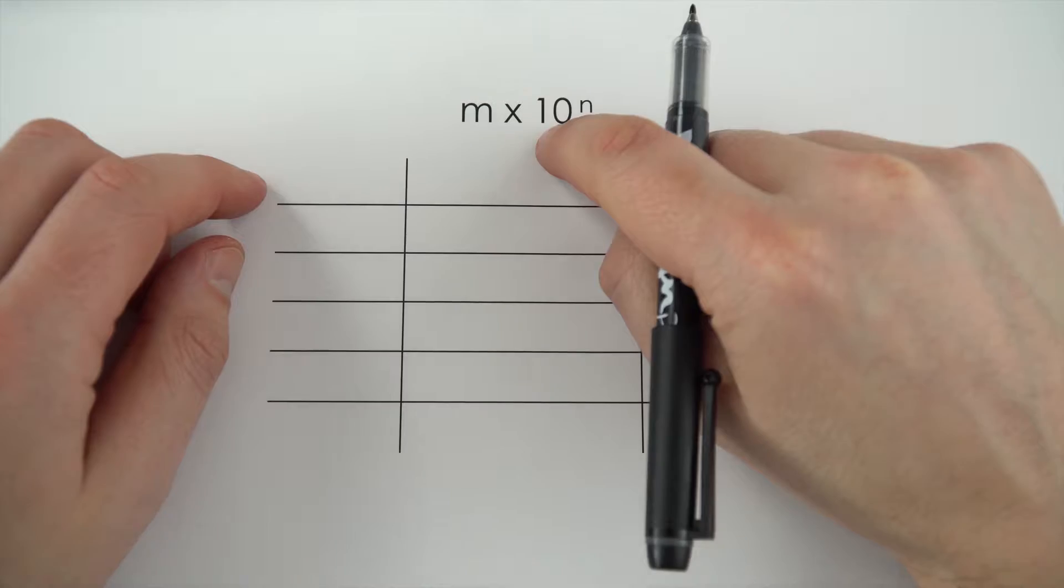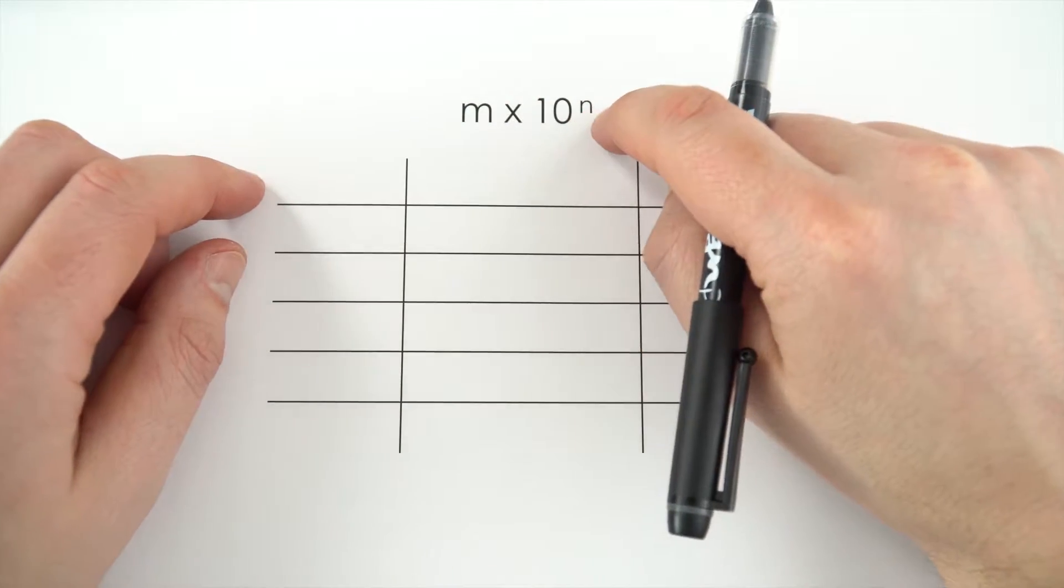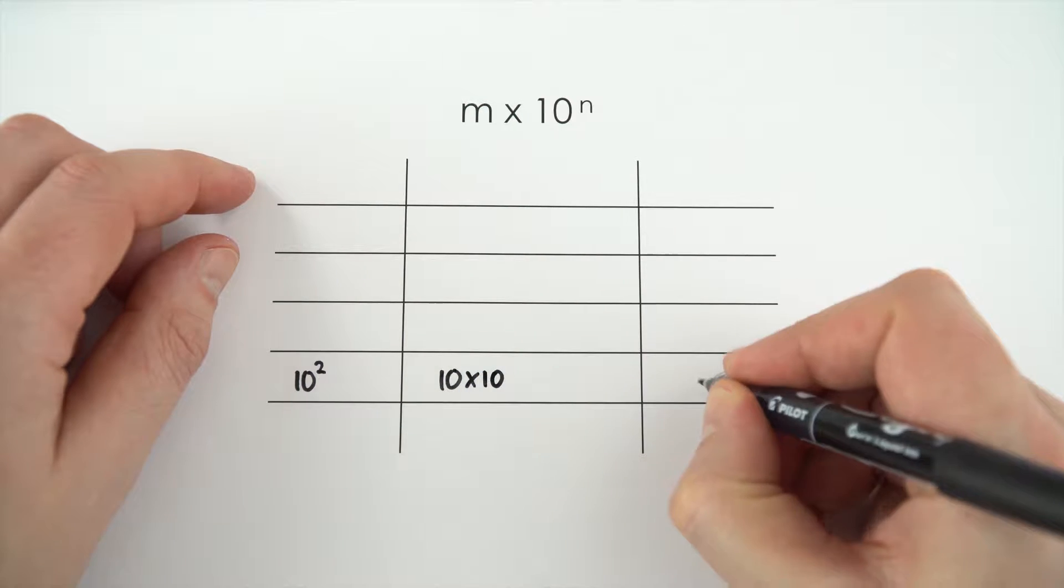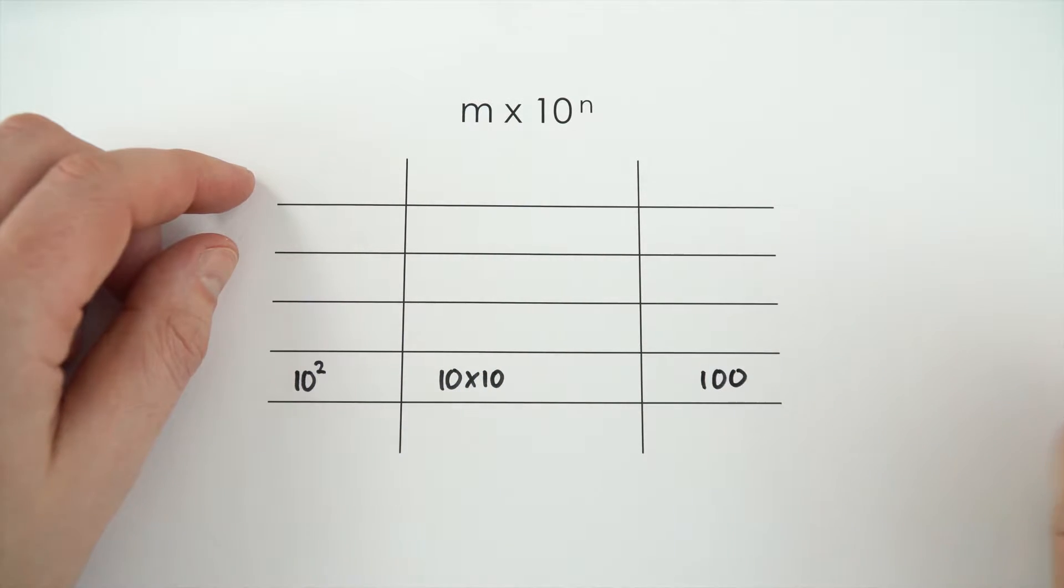So I just thought I'd explain a little bit more about 10 to the n and actually what this means. Now, 10 squared is the same as 10 times 10, and that's equal to 100. Pretty straightforward.